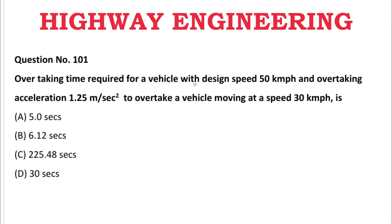Next question: Overtaking time required for a vehicle with design speed of 50 km/h and overtaking acceleration of 1.25 m/s² to overtake a vehicle moving at 30 km/h is — A: 5 seconds, B: 6.12 seconds, C: 225.48 seconds, D: 30 seconds. The correct answer is B, 6.12 seconds.